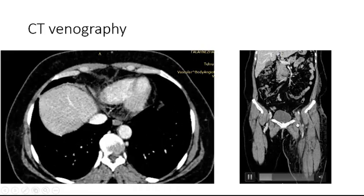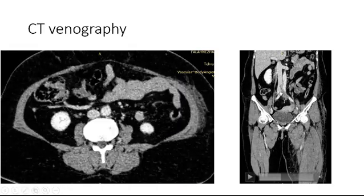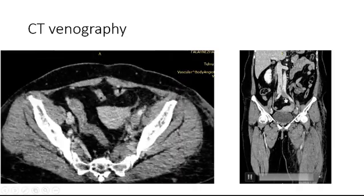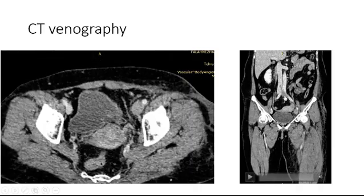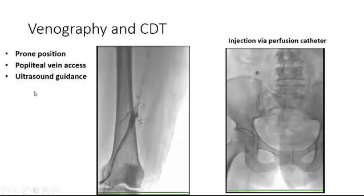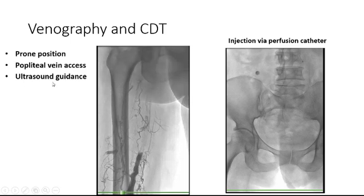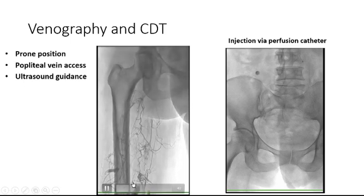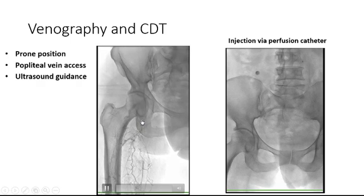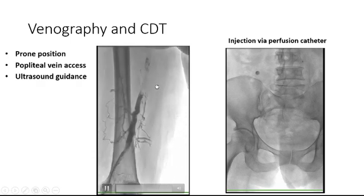In coronal views you can see slight protrusion of clots into the inferior vena cava. As we saw, there is thrombotic occlusion of the left common iliofemoral veins. Venography and catheter-directed thrombolysis in prone position from popliteal vein access under ultrasound guidance shows complete occlusion of the superficial femoral vein, common femoral vein, and external and common iliofemoral veins at the left side.